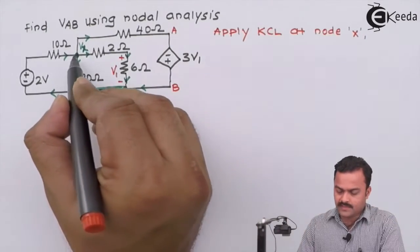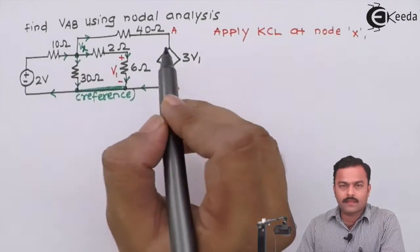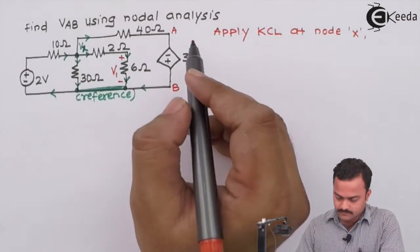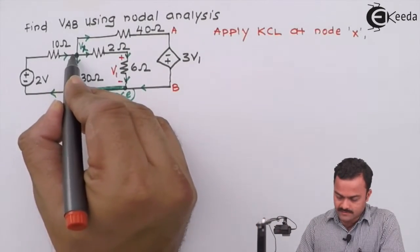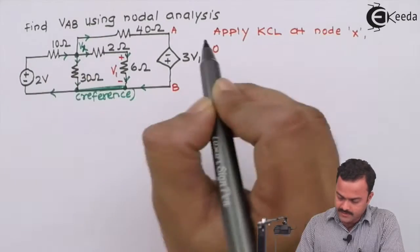So at node X, there are four branches connected. Out of that, one is the incoming and the remaining three are outgoing. So the incoming current is this, which is started at a reference and ending on Vx.